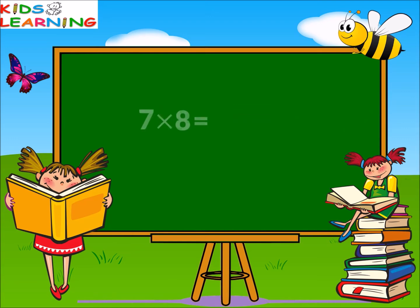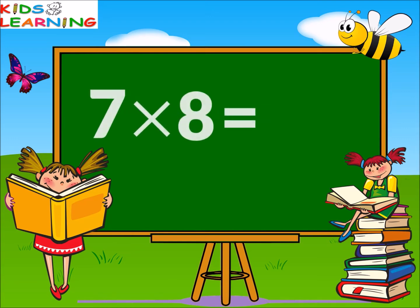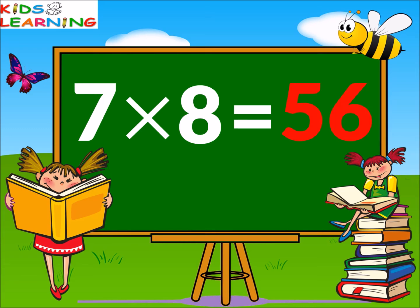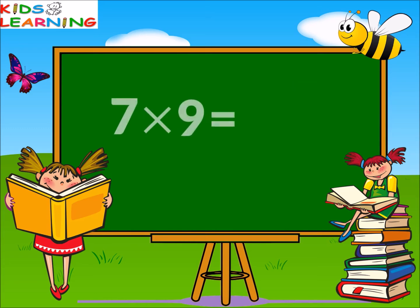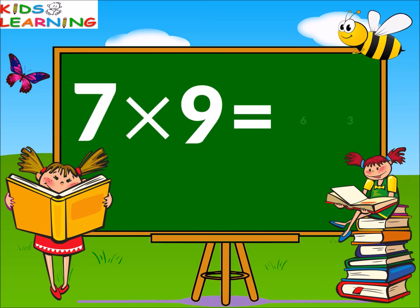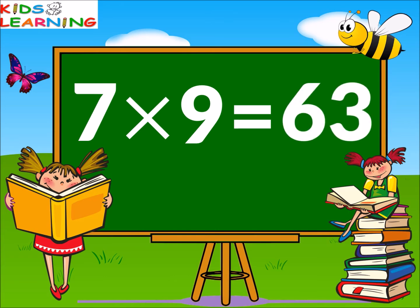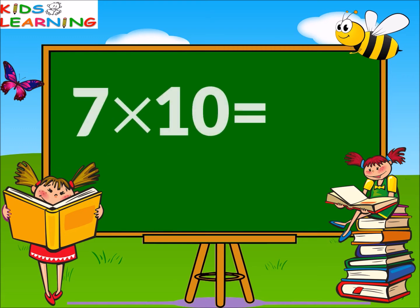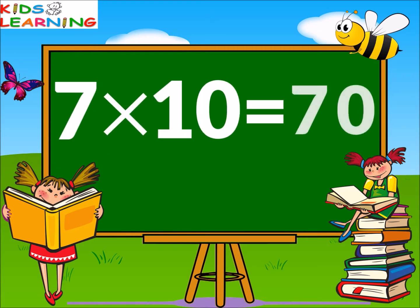Seven eights are fifty-six. Seven nines are sixty-three. Seven tens are seventy.